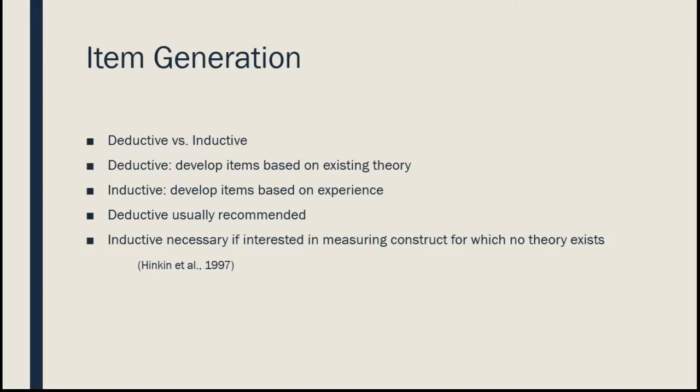Item generation is when you come up with the questions or items — usually written as statements that people agree or disagree with. There are two ways to generate items: deductive versus inductive. In a deductive model, we start with a theory and develop items based on that theory. Inductive is the opposite — we develop items based on experience, perhaps because no theory exists for what we want to study. The deductive approach is generally recommended, though sometimes inductive is necessary.